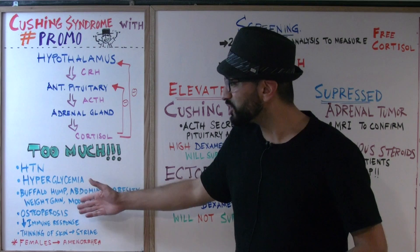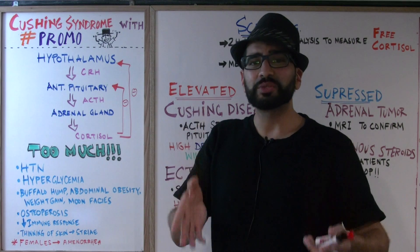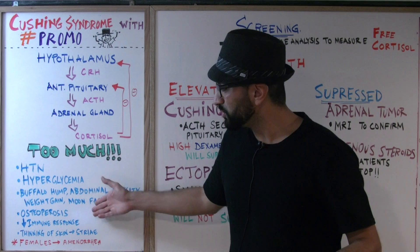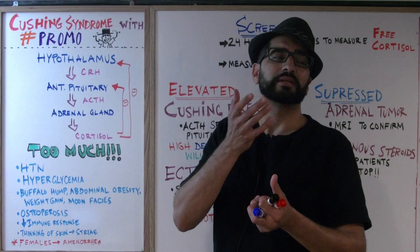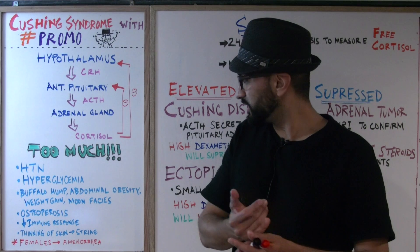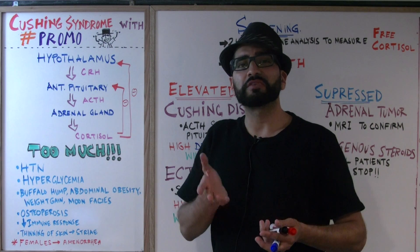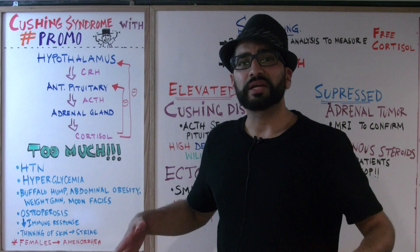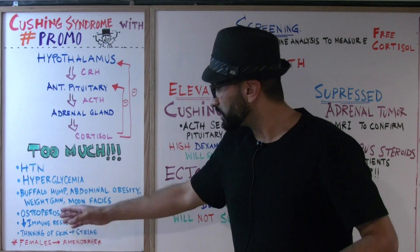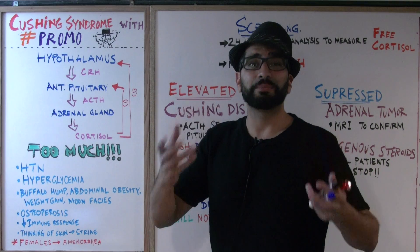Next is osteoporosis, because too much cortisol decreases bone formation. There's also a decreased immune response, so patients are more prone to illness and disease. Thinning of the skin occurs because cortisol decreases fibroblastic activity, causing striae around the patient's abdomen. And in female patients, it causes amenorrhea.